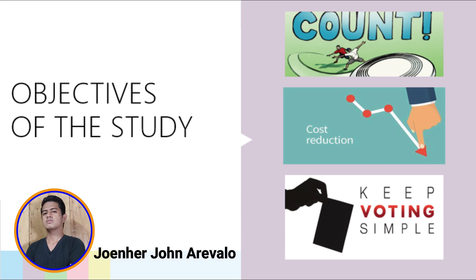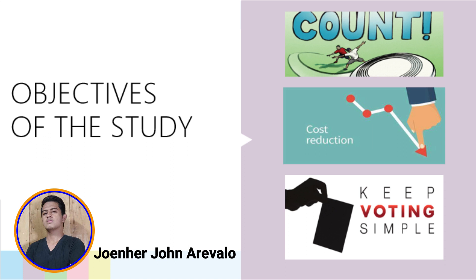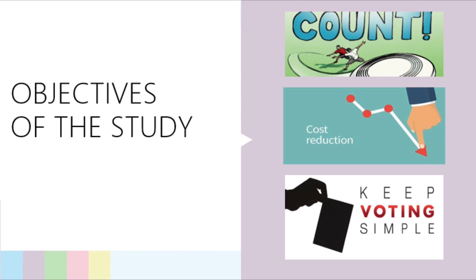Specific Objectives: The study aims to design a voting machine that speeds up the counting of ballots, reduces the cost of paying people to physically count ballots, and helps vulnerable people to vote easily.